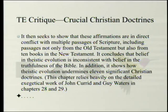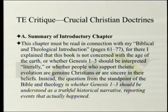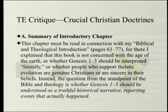The summary of the chapter itself is: this chapter provides an overview of the issues raised by theistic evolution in relationship to the truthfulness of the Bible and several historic Christian doctrines. Notice that it does not talk about inerrancy — we're going to find out why next week — but it talks about the truthfulness of the Bible. Instead, the question from the standpoint of the Bible and theology is whether Genesis 1–3 should be understood as a truthful historical narrative reporting events that actually happened.